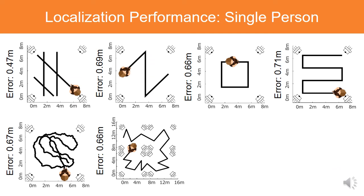In this slide, we demonstrate the localization performance of our method. In the multi-person scenario, it can be seen that the average localization error of our system is about 64 cm.